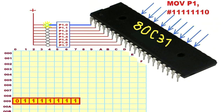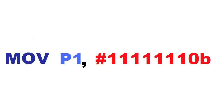The number with the hash mark means that it will be entered directly in the register. Of course, you can convert the binary number 11111110 to hexadecimal FE, or decimal 254.